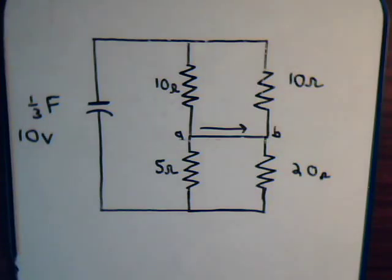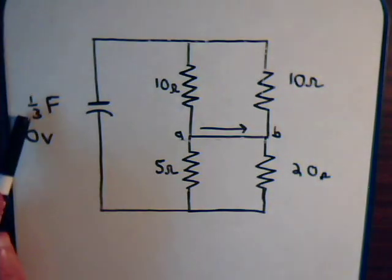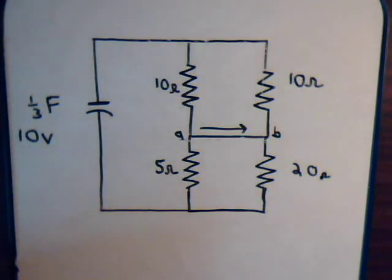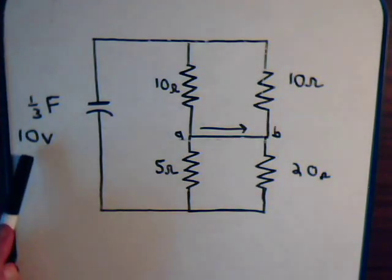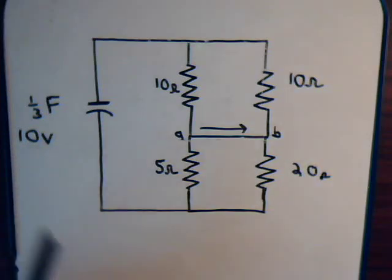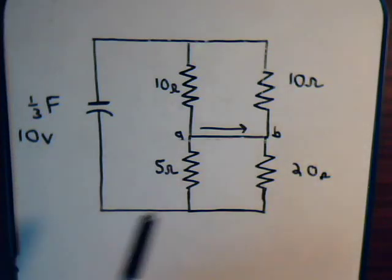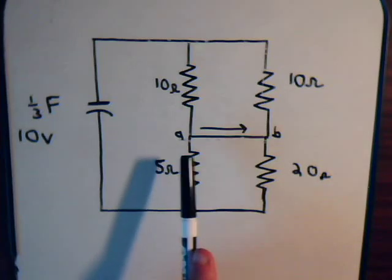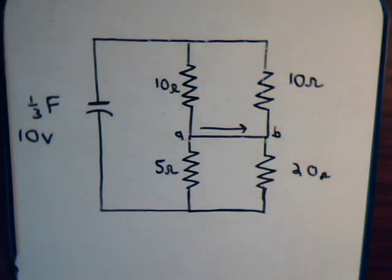In this video we have a capacitor with the value of 1/3 Farad, and it was charged to a total of 10 volts. Now we're going to let this charged capacitor discharge to the circuit, and when it does we want to know what is the amount of current that goes across from A to B.